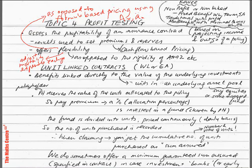Topic 4: Profit Testing. Here, we assess the profitability of an insurance contract based on projecting income and outgo of a policy. We will use the results to set premiums and reserves. This topic is also known as cash flow-based pricing.